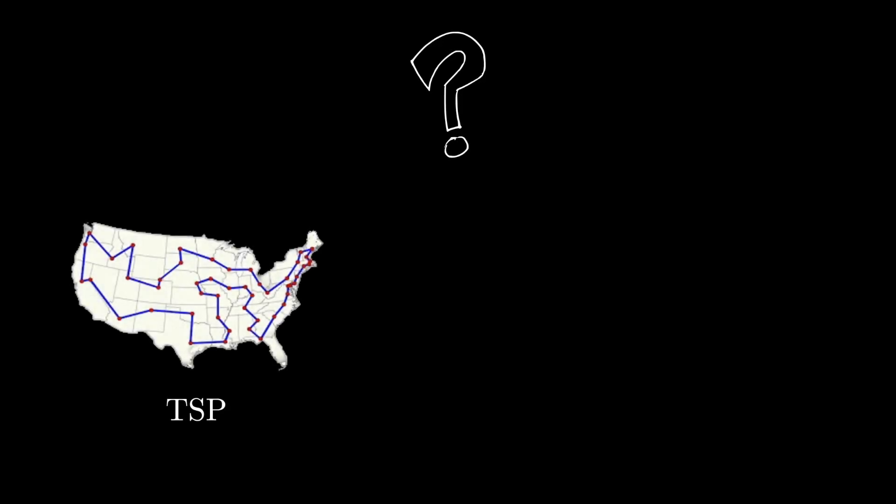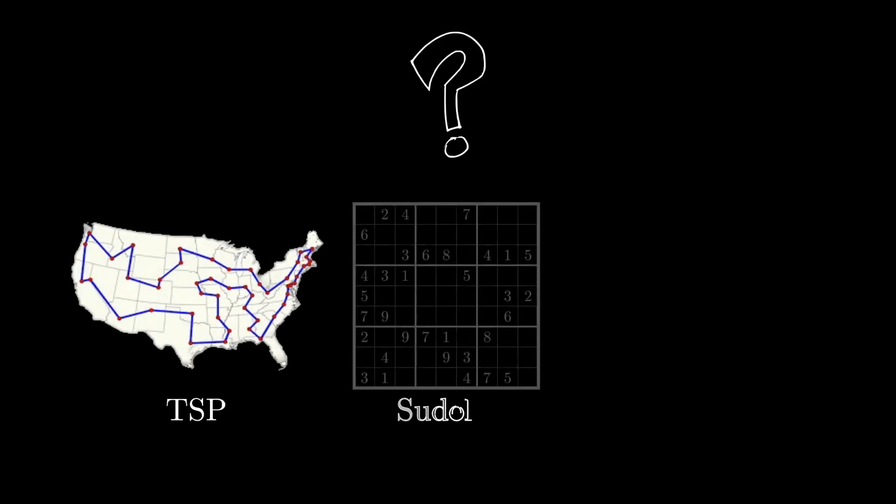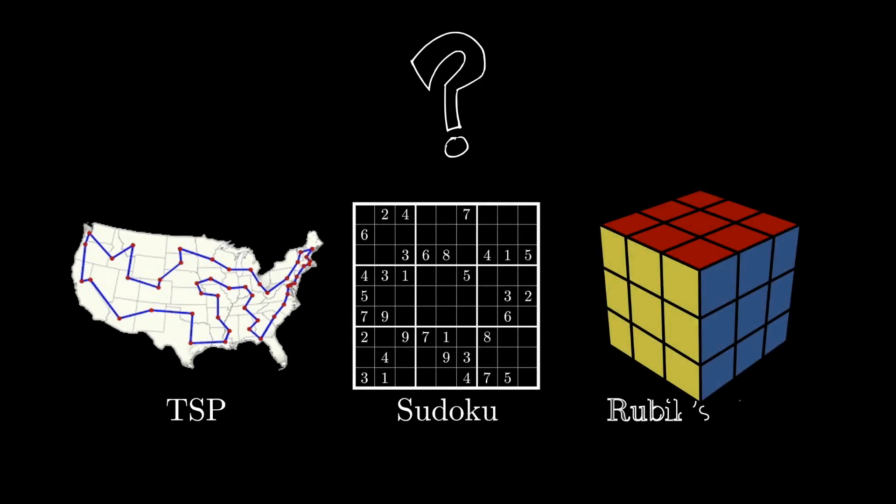Do you think it is possible to solve the traveling salesman problem, a Sudoku puzzle, and a Rubik's Cube by simply making random guesses as to what the solution is?